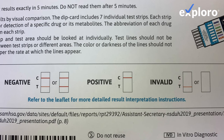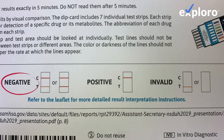You are positive for the drug being tested for if you get a line in the control field, but no line in the test field. And you are negative for the drug you are testing for if you get a line in the control field, and then any line, no matter how dark or faint, in the test field.